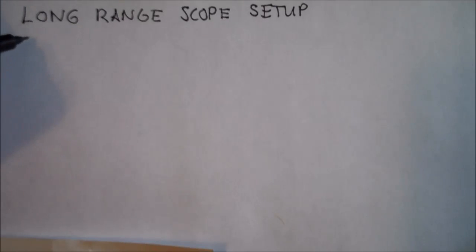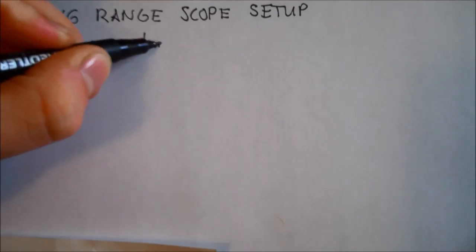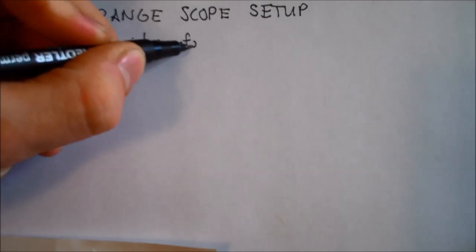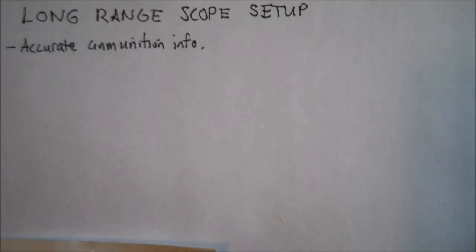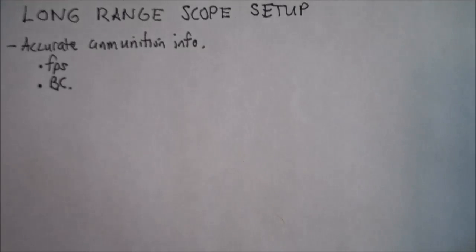So the first thing you're going to want to do is you need to get some accurate bullet data or ammunition info. You can get some of that just by the box of ammunition that you bought or that you're using in your rifle or pistol. The main things you want to take note of are the feet per second, that should be on the box. You need to get the ballistic coefficient or BC, and you can normally find that by looking it up on Google, looking up the specific ammo or specific bullet.